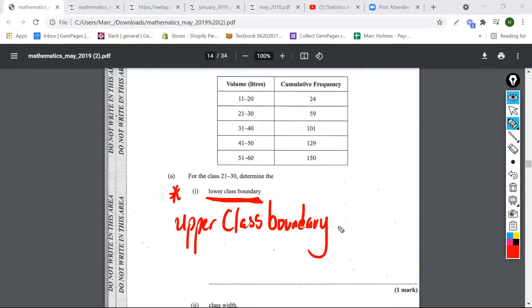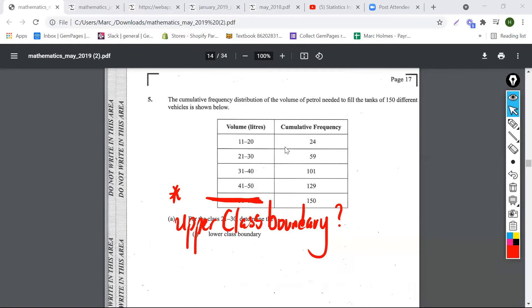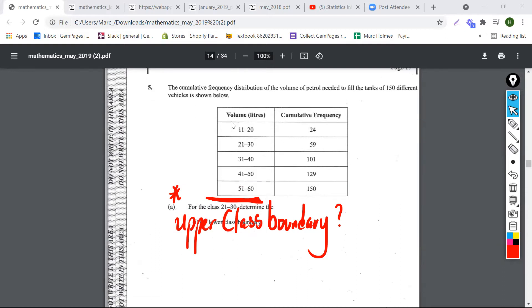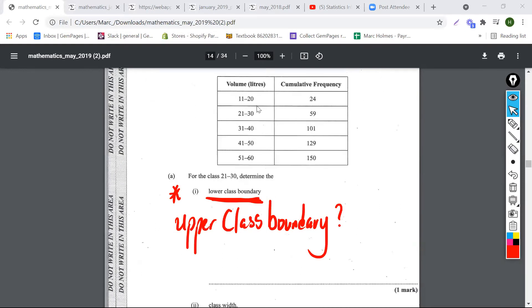And what in the world does that mean? So let's look at this question. Let's go back to the same question here. They give us some information. This is the table that they give us. It says here the cumulative frequency distribution of the volume of petrol needed to fill up the tanks of 150 different vehicles is shown below. They give us some information in the table.